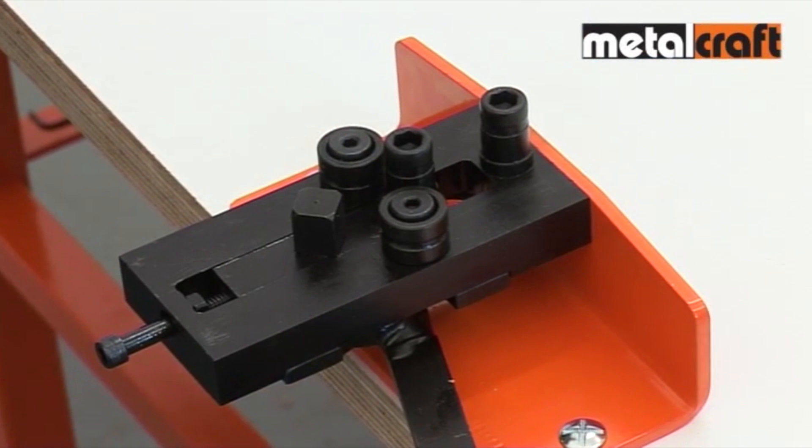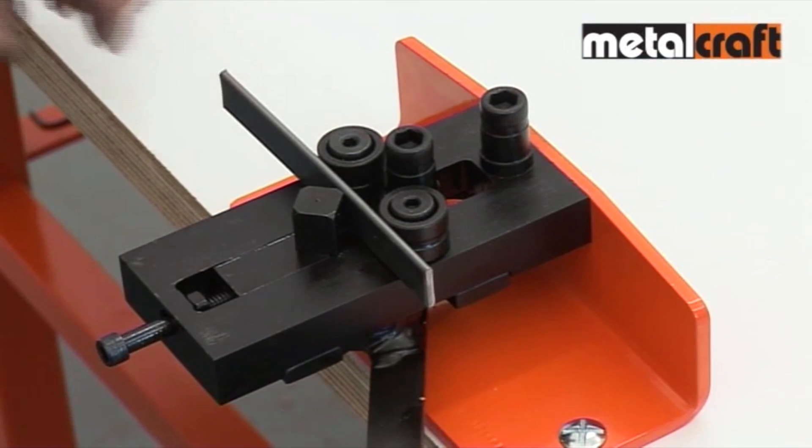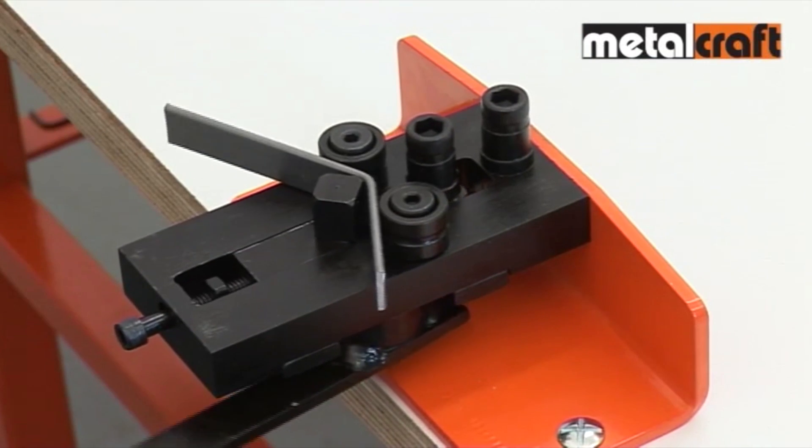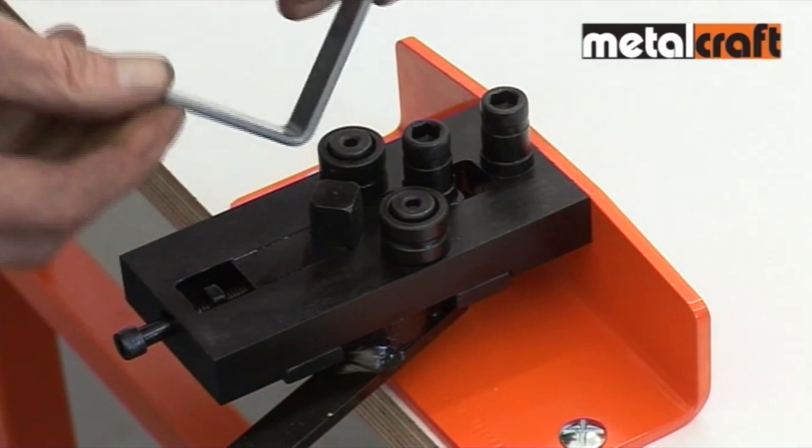The bending function on the RBR tool is again simple to use. Just place the steel strip between the square bending head and the two side rollers. With the almost effortless pull of the handle, you can form a bend of up to 90 degrees.